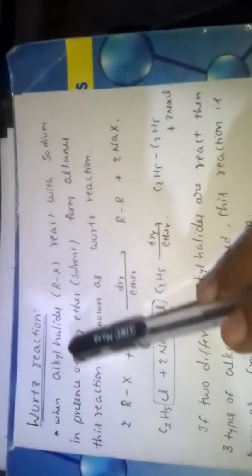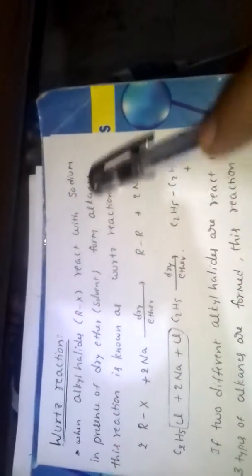Wurtz reaction. When alkyl halide, denoted by Rx, reacts with sodium in presence of dry ether, it acts as solvent and forms alkanes. This reaction is known as Wurtz reaction.